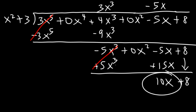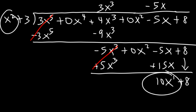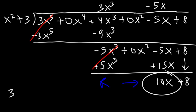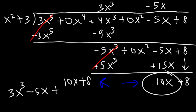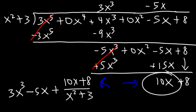We can't divide 10x by x squared because the exponent 1 is less than 2, so this is where we stop. What we see here is the remainder. The final answer is 3x cubed minus 5x, plus the remainder — which is 10x plus 8 — divided by x squared plus 3. This is how you write the answer whenever you have a remainder.